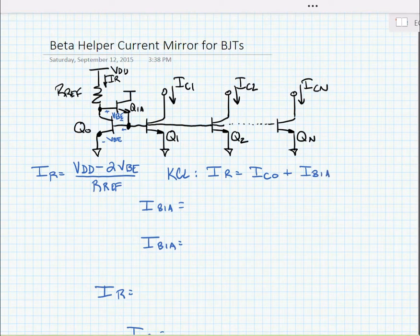IR is equal to IC0 plus IB1A. Now we know that IB1A is just equal to the collector current of Q1A divided by beta plus 1.